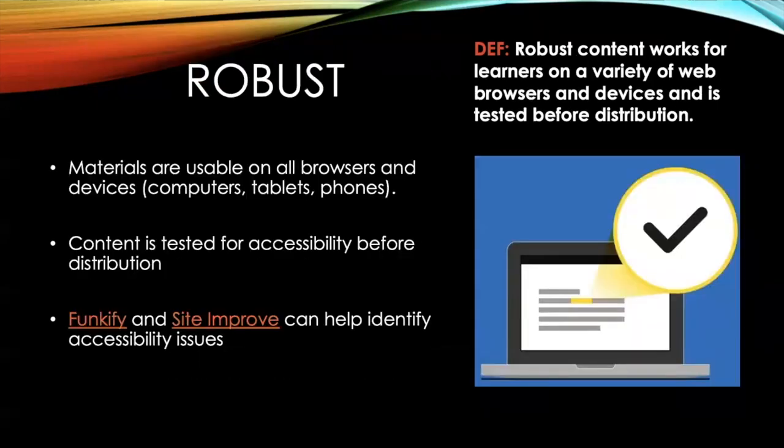Number four: robust content works for learners in a variety of web browsers and devices, including tablets and smartphones. Robust content is also tested before it is distributed to ensure that it meets accessibility guidelines and can be accessed by everyone.